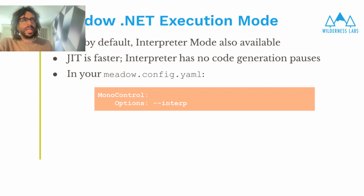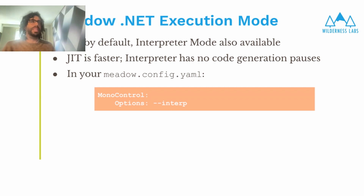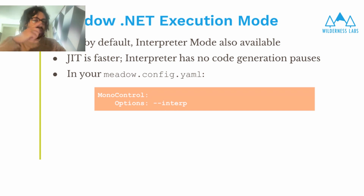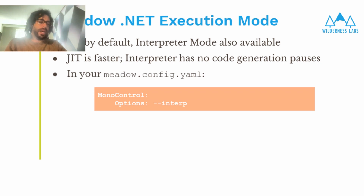That delay might affect some time-sensitive cases when you use certain methods. Most of the time, JIT is the faster way to run your app. We also provide an interpreter mode — it's a little smoother in operation but significantly slower, about five times slower. JIT is five times faster than interpreter. If you want to switch from the default of JIT, just go to your meadow config.yaml in your application and add the relevant section.